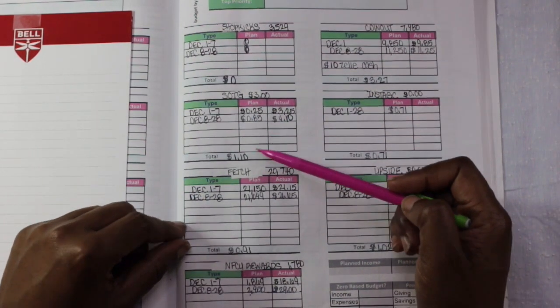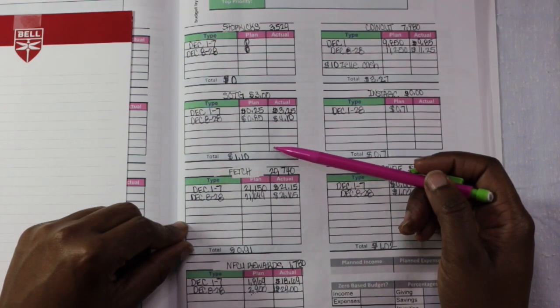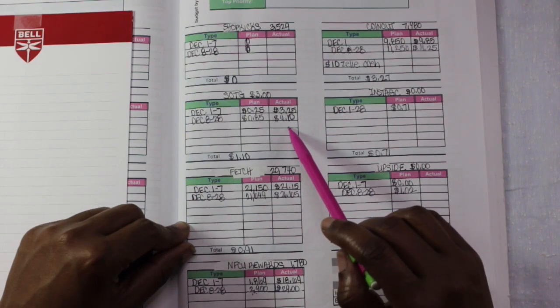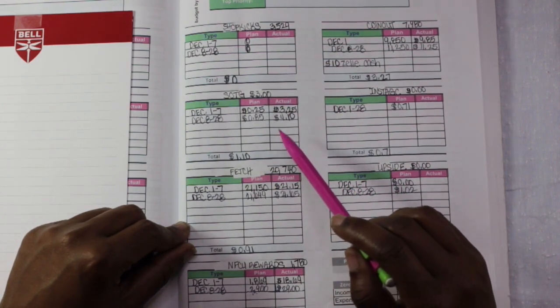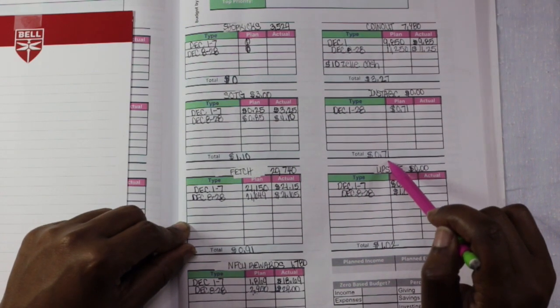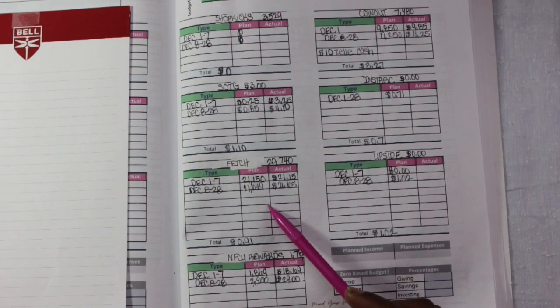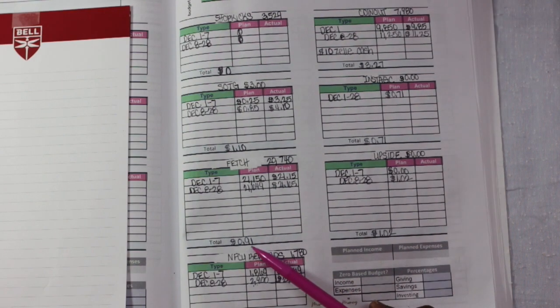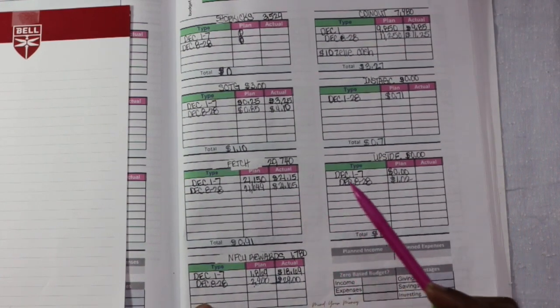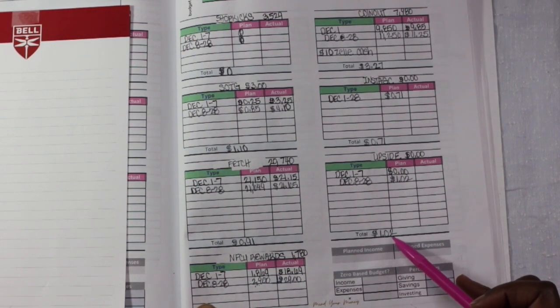Next we have Surveys on the Go. I earned $1.10. With this one you have to earn at least a minimum of $10 in order to cash out. I do have $4.10 in there as of December. Next we have InstaGC. I earned $0.71 in there. Fetch Rewards, another receipt scanning app. I earned $0.91. I do have $21.65 in that app that I'm saving up. And then we have the Upside app. I earned $1.02.